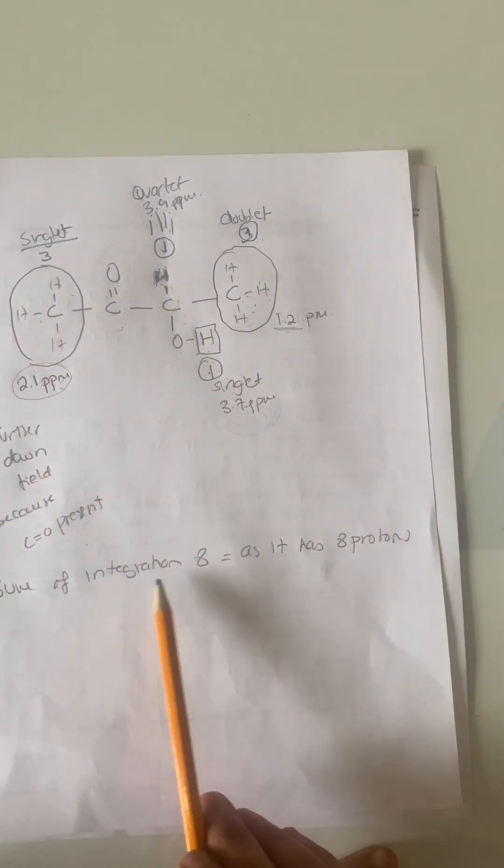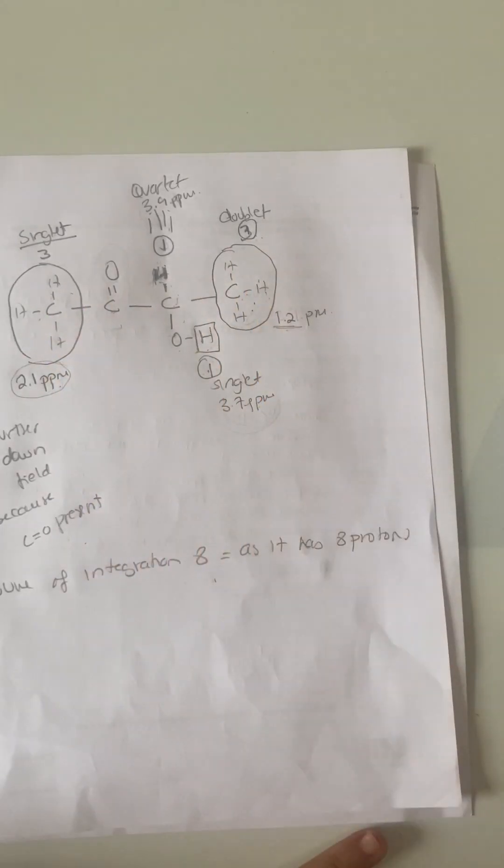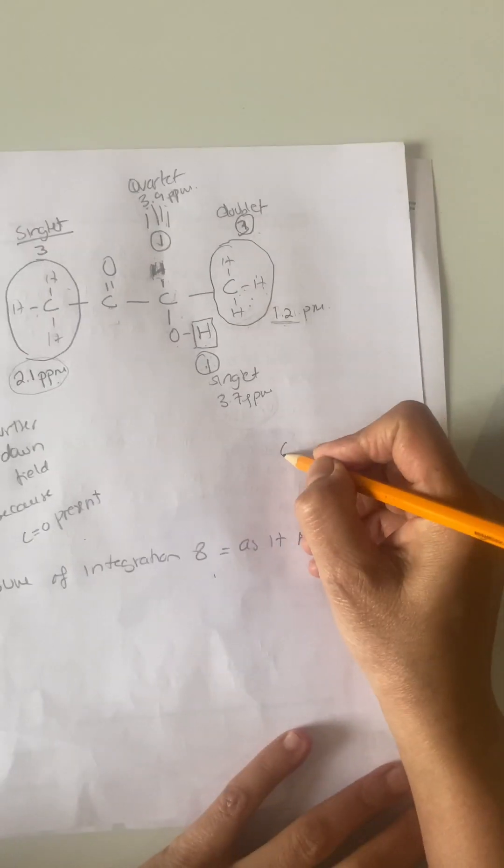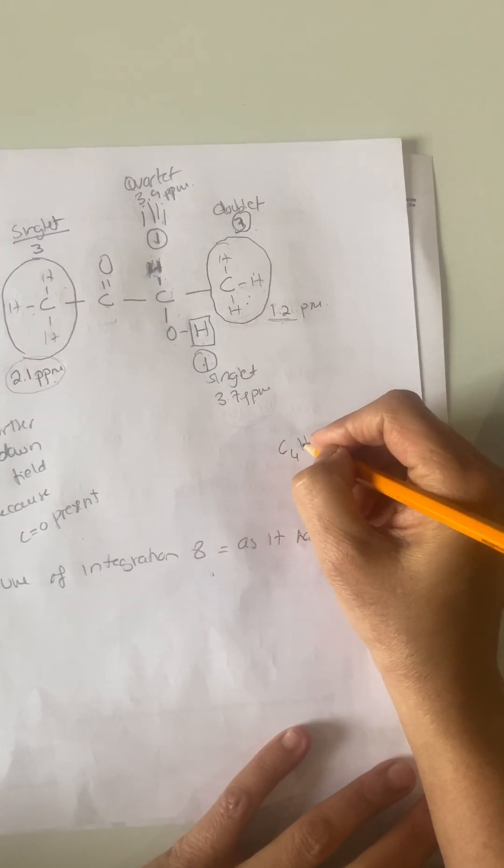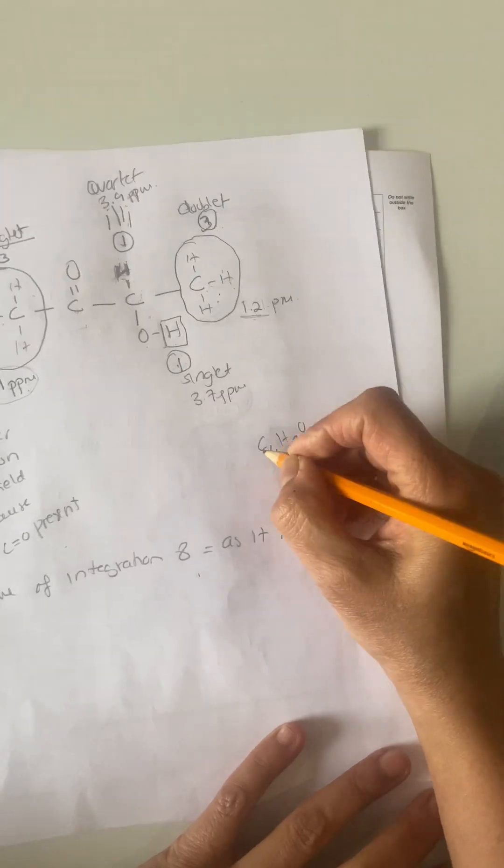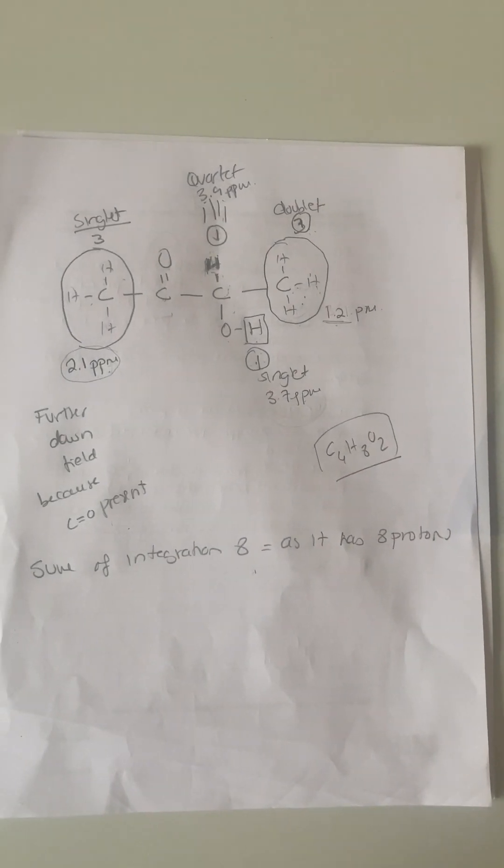So if you sum up all the integration values it gives you 8. There's 8 protons. If there's 8 protons, your formula is going to be C4H8O2. So that's the molecular formula of your compound. So that's how you work that out. Hopefully that was helpful.